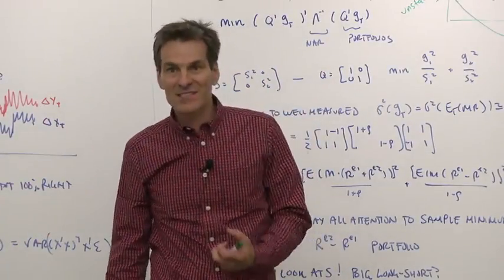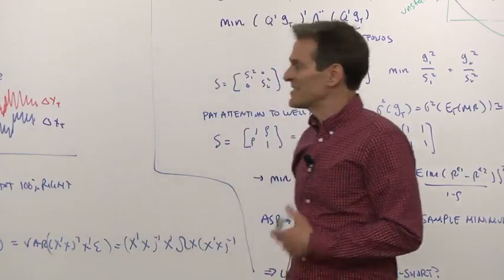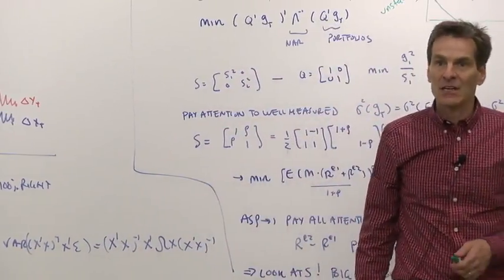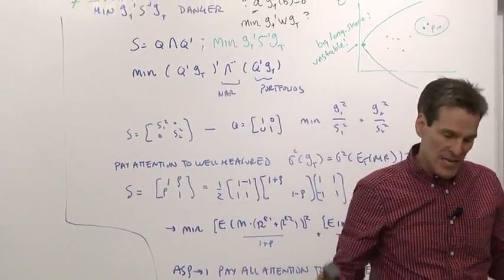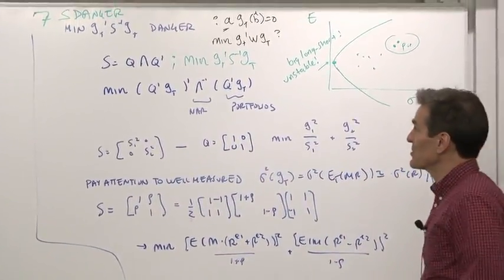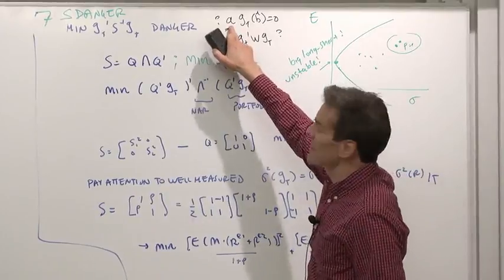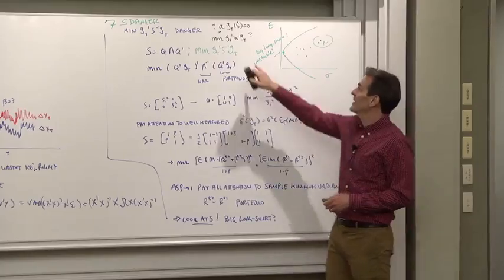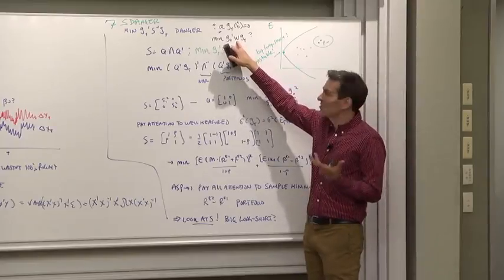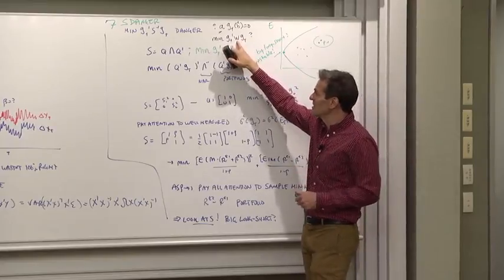So thinking about robust or intuitive versus statistically efficient choices, the other place this comes up is what weighting matrix would you like to use if you're going after a minimization approach, as opposed to what A matrix do you want to use if you're just going to set some moments equal to zero.